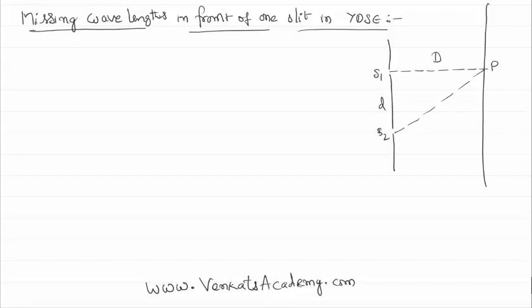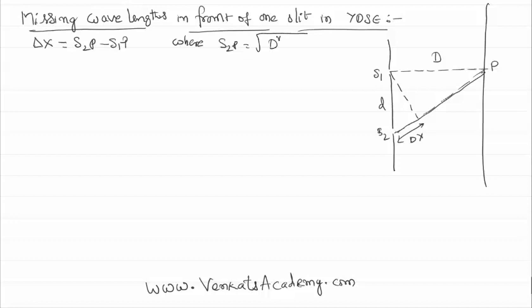The path difference created between these two waves can be found by drawing a perpendicular line, as we have done multiple times. We can say the path difference Delta X between the two waves on reaching point P is S2P minus S1P. Being a rectangle triangle, we can write S2P as the square root of capital D squared plus small d squared. So Delta X becomes the square root of capital D squared plus small d squared minus small d.